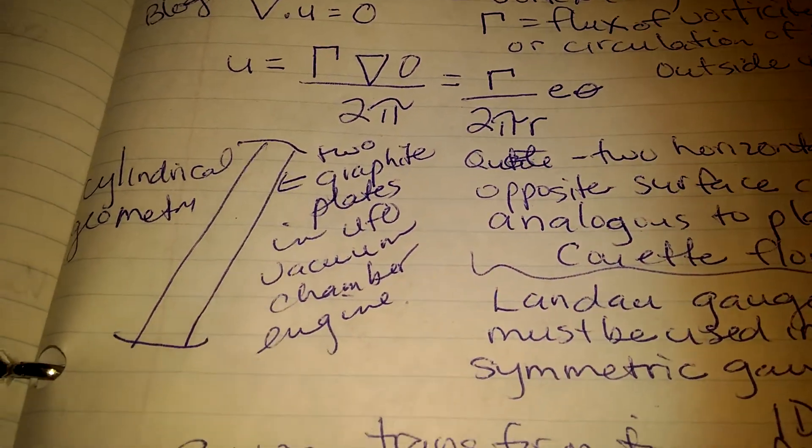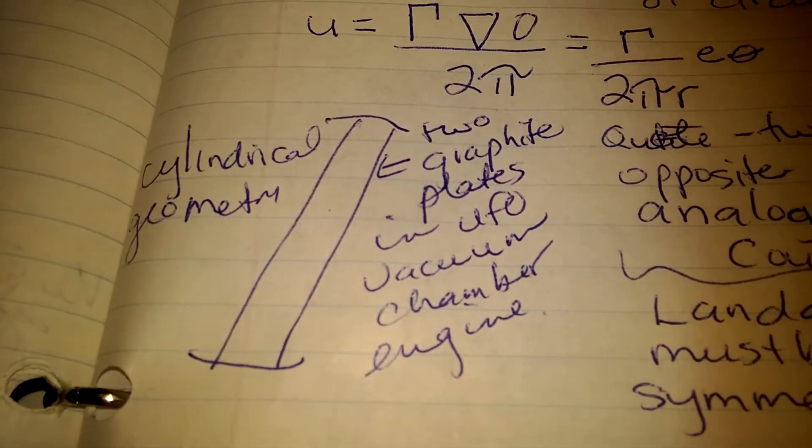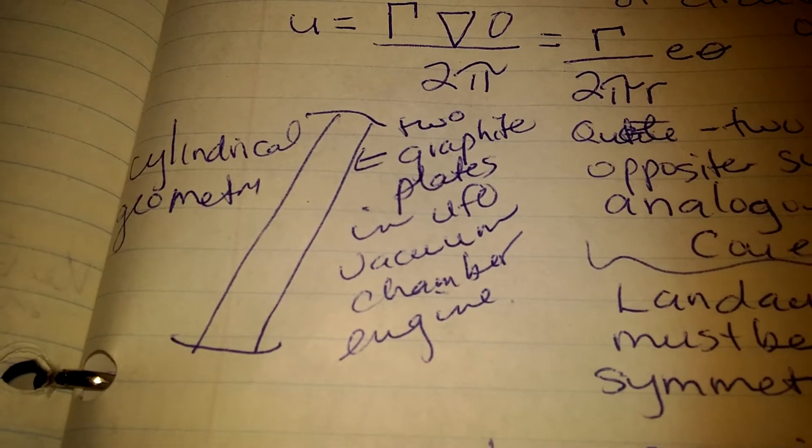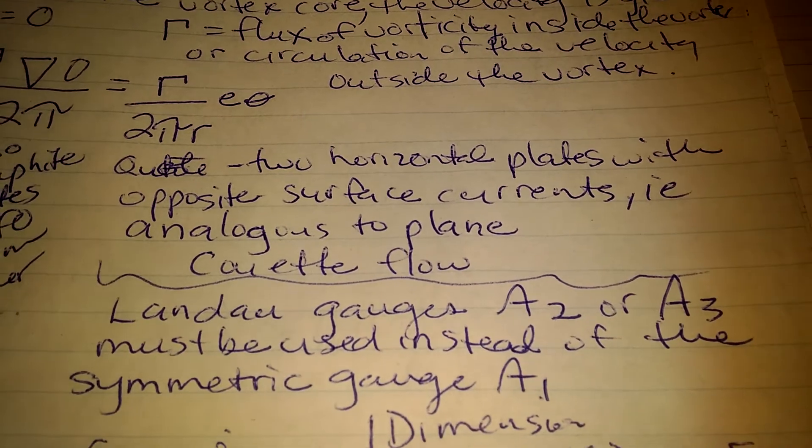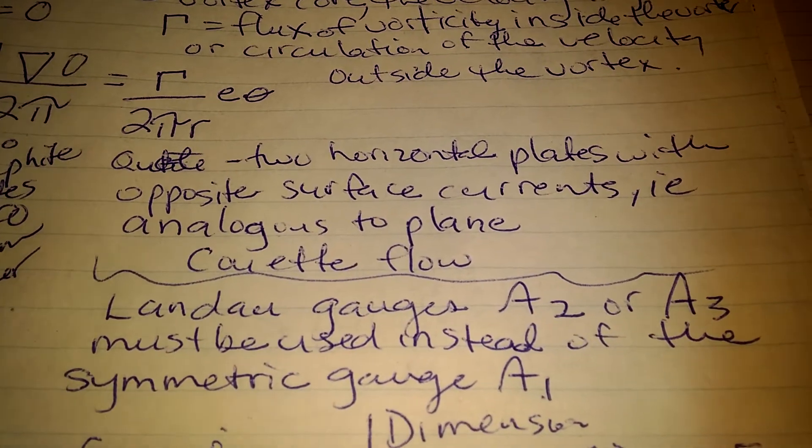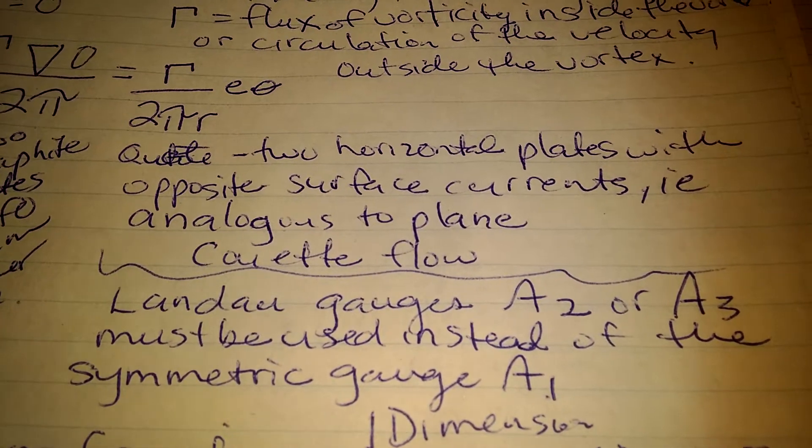There's the equation again, and then it shows the cylindrical geometry equals two graphite plates in the UFO vacuum chamber engine. And quote, two horizontal plates with opposite surface currents, i.e. analogous to plane.